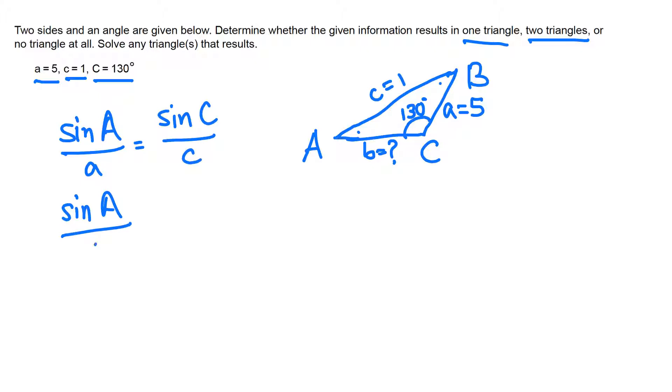Sine A, that's just sine A because we are trying to determine angle A, over lowercase a which is 5, equals sine C which is sine 130° all over c which is 1.